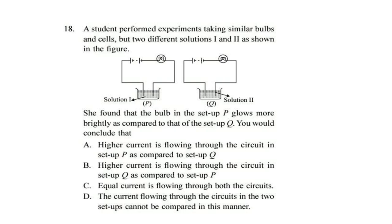Question 18. A student performed experiments taking similar bulbs and cells but two different solutions 1 and 2 as shown in the figure. She found that the bulb in setup P glows more brightly as compared to that of the setup Q. You would conclude that. Now read the statements carefully and find out your answer. You can pause the video if required. Correct answer is option A. Higher current is flowing through the circuit in setup P as compared to setup Q.